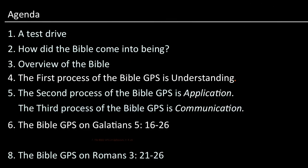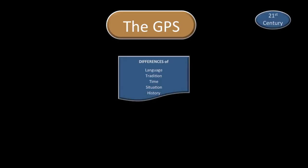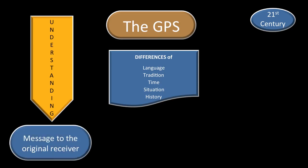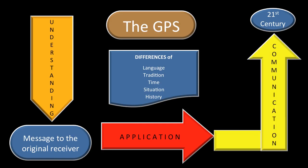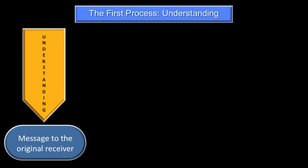In this video we're going to focus on the Bible GPS on Ephesians 5 from verses 8 to 20. We're going through the GPS method to help us cross the gap between us and the people of the Bible, because there are many differences. The first step is understanding, to take us to the message to the original receiver. Then we ask if it's applicable, and if so, we communicate this message in the 21st century.